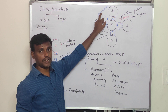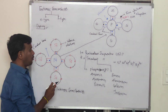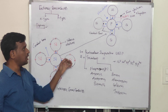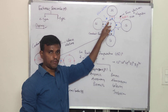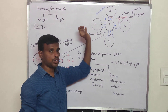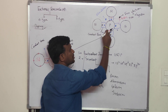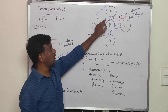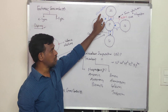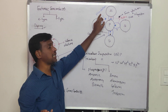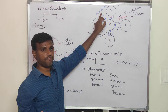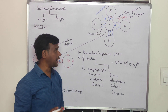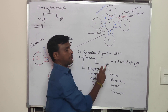That extra electron is considered as a free electron. This free electron, if it moves, will conduct current — the flow of electrons is nothing but current. If we apply some heat energy, the same process occurs: there is a breaking of covalent bonds, and because of that, hole-electron pairs will be generated.